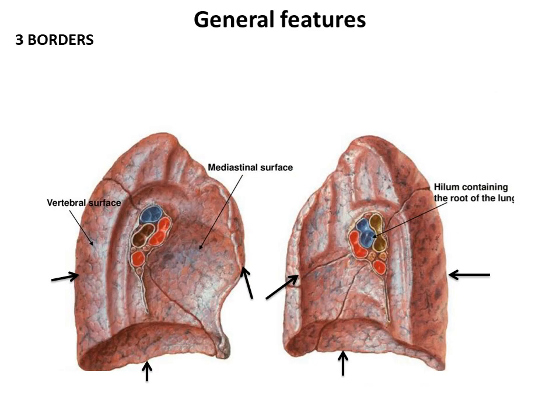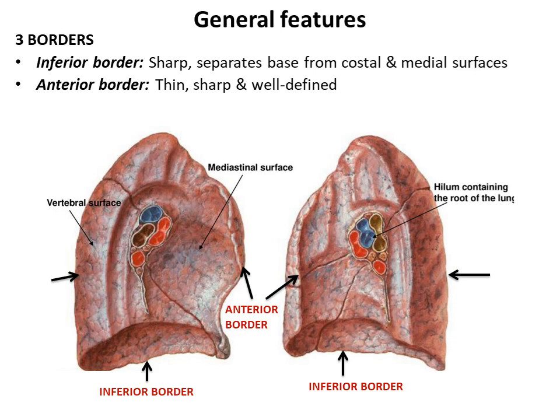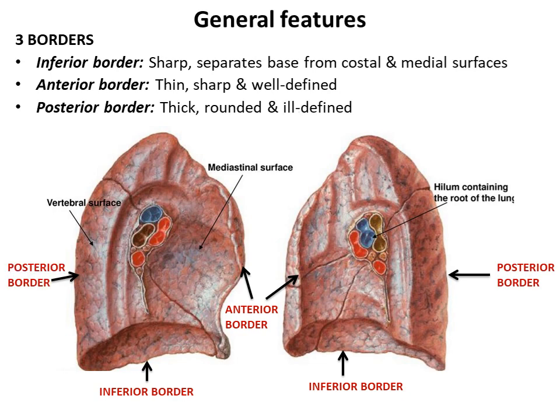The lung has three borders. The inferior border is sharp and it separates the base from the medial and costal surfaces. The anterior border is characteristically thin, sharp and very well defined. The posterior border on the other hand is thick, rounded and ill-defined. It is important to differentiate the thin sharp anterior border from the rounded ill-defined posterior border to determine the side of the lung.